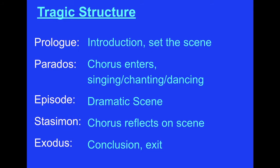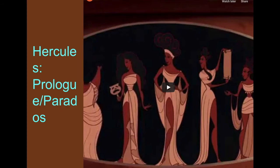And then finally you have your exodus — your conclusion, like our denouement or resolution — and then everyone exits. The best easy-to-understand example is Disney's Hercules. At the very beginning we have the prologue with the women talking about who Zeus was. In the playlist with this video, in the Greek theater playlist, these videos will be there so you can watch them to better understand.